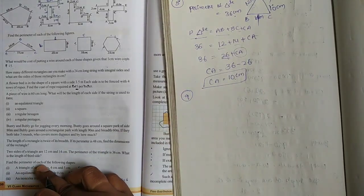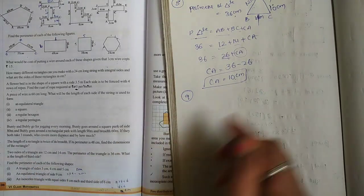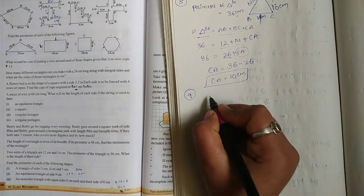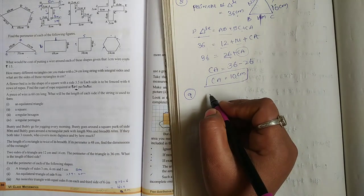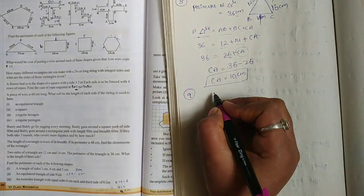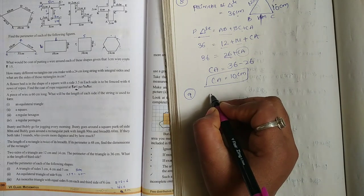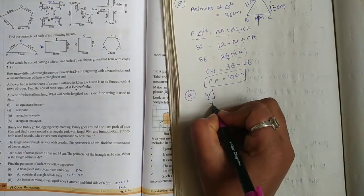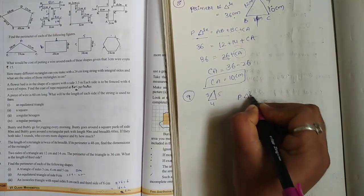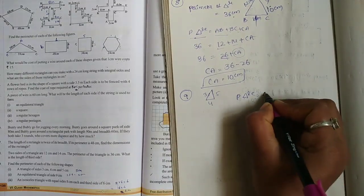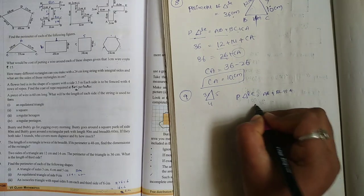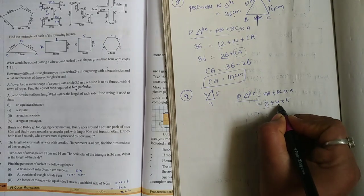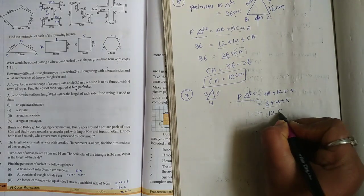Problem 9: Find the perimeter of each of the following shapes. First one: a triangle with sides 3 cm, 4 cm, and 5 cm. Perimeter of triangle equals AB plus BC plus CA equals 3 plus 4 plus 5 equals 12 cm.